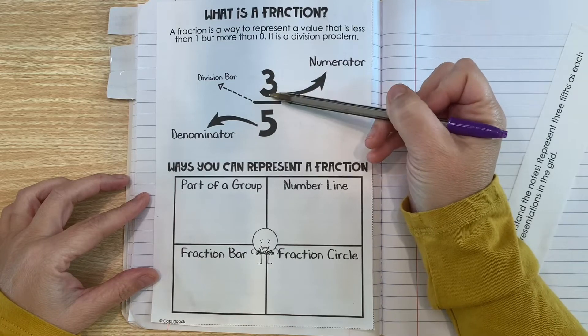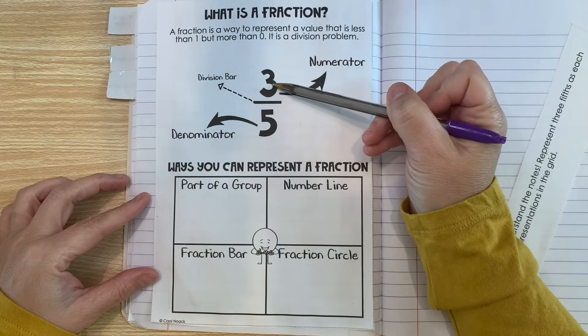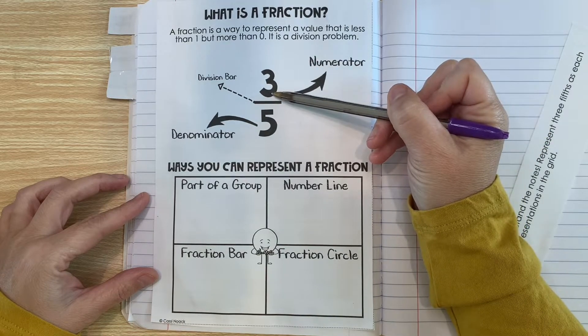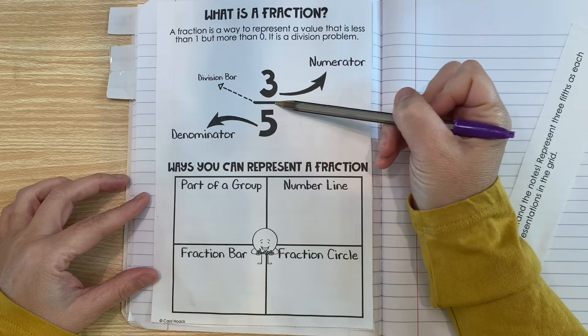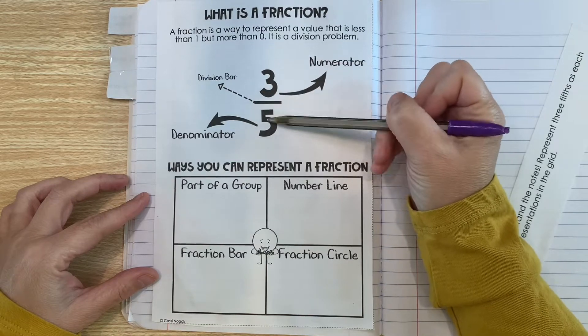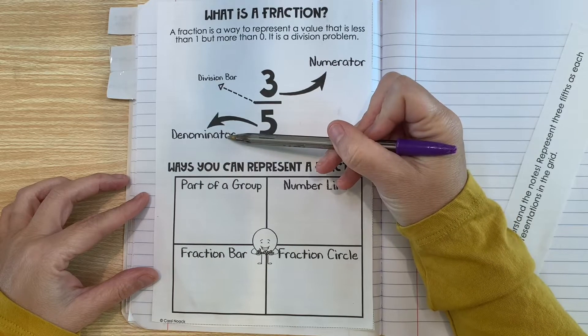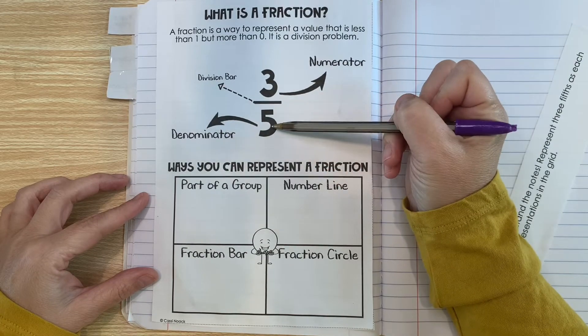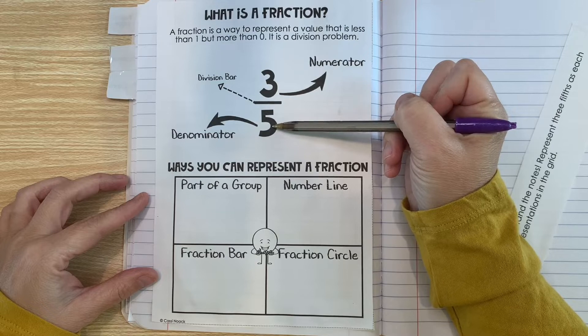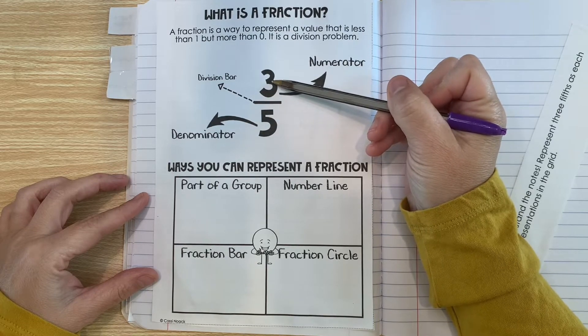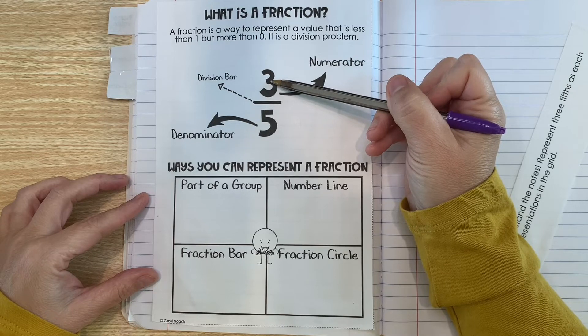Now all fractions are made of three main parts. We have a numerator, and the numerator is just the number that you see on the top of the fraction. We have the division bar that separates the numerator from the denominator, and we have the denominator. The denominator represents the number of parts in one whole. The numerator represents how many of those parts we're counting up or focused on.